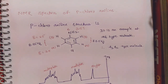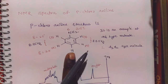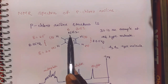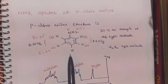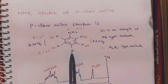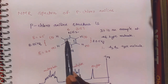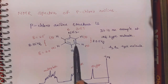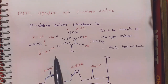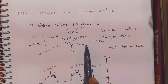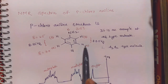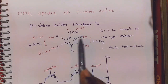NMR spectra of para-chloroaniline. In this para-chloroaniline structure, at the para position is the amine group, another para position is the chlorine group, and the remaining meta positions have hydrogens. This molecule has two types of protons: A-type and B-type.